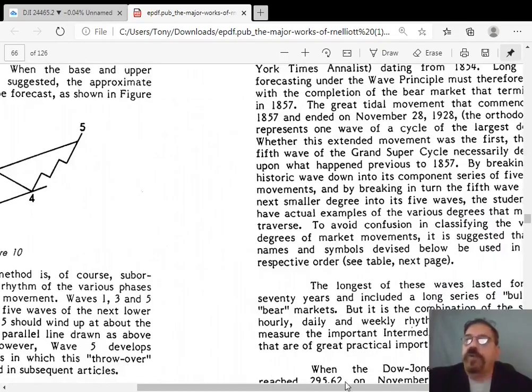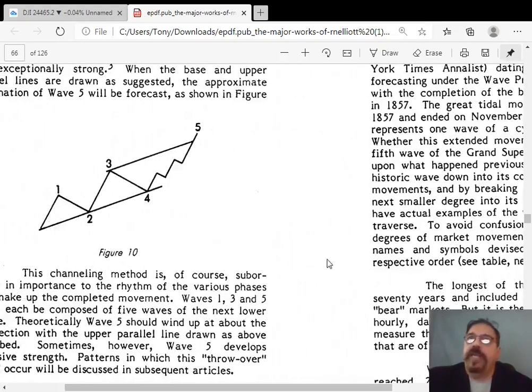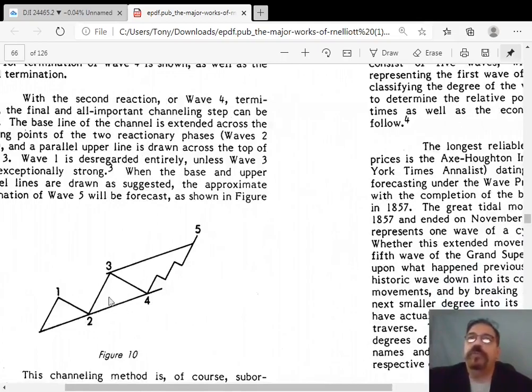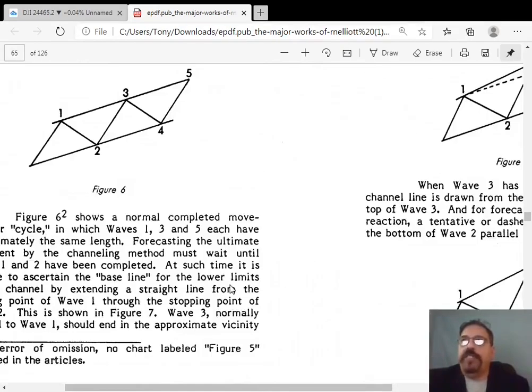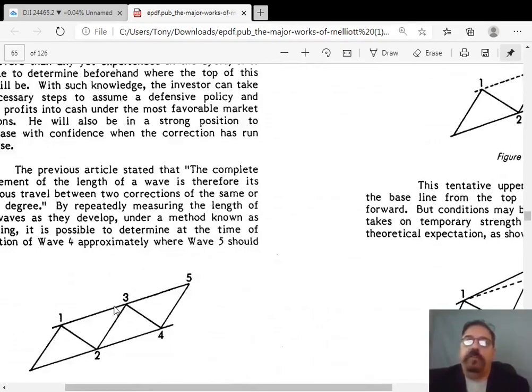Once he's got wave 4 in place, he then connects waves 2 and 4, parallels that from the top of 3 and that's his target for wave 5. I mention that because I use channeling in my own Elliott wave technique mainly to confirm that the wave 4 is in the same wave degree as the wave 2. If it approximately channels, if this wave approximately channels with that wave, you can be confident that you've labeled them correctly.